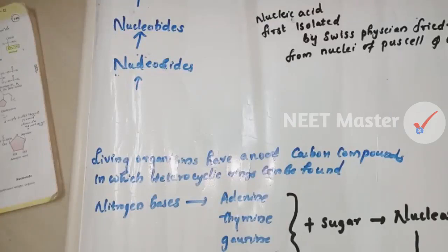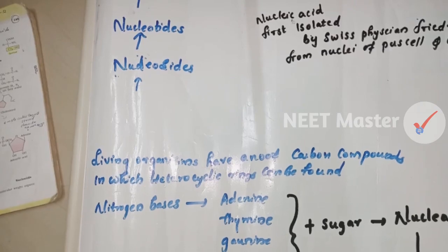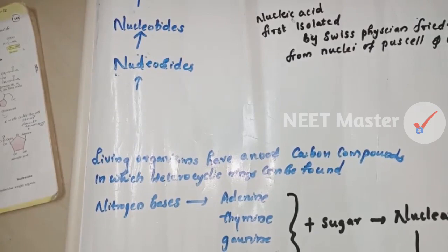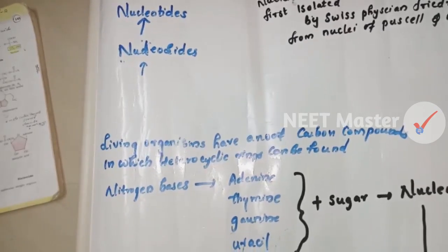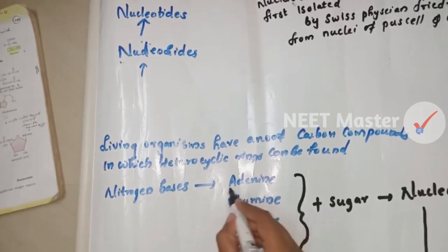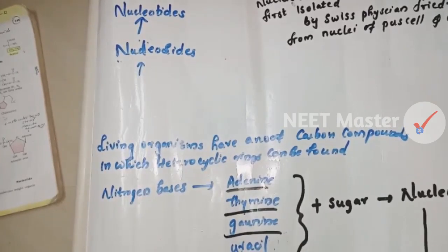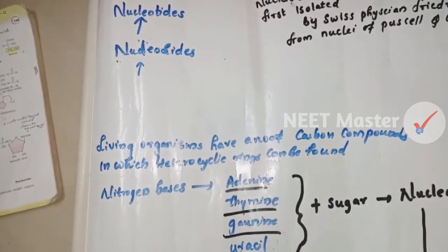Living organisms have a number of carbon compounds in which heterocyclic rings can be formed — these are nitrogen bases. Now we will learn nucleic acids. The important components are nitrogen bases. Nucleic acids are DNA and RNA. The nitrogen bases are adenine, thymine, guanine, uracil, and cytosine.